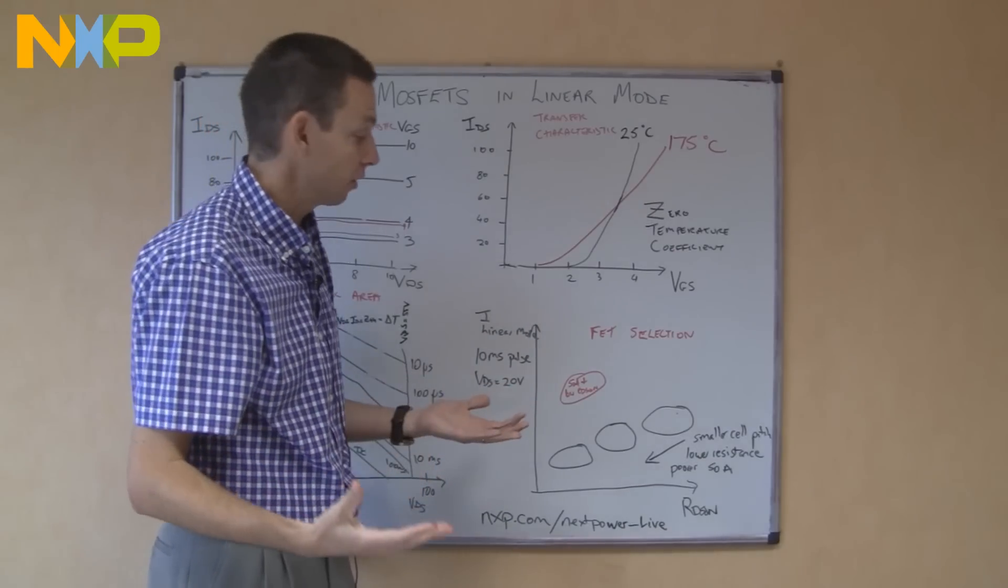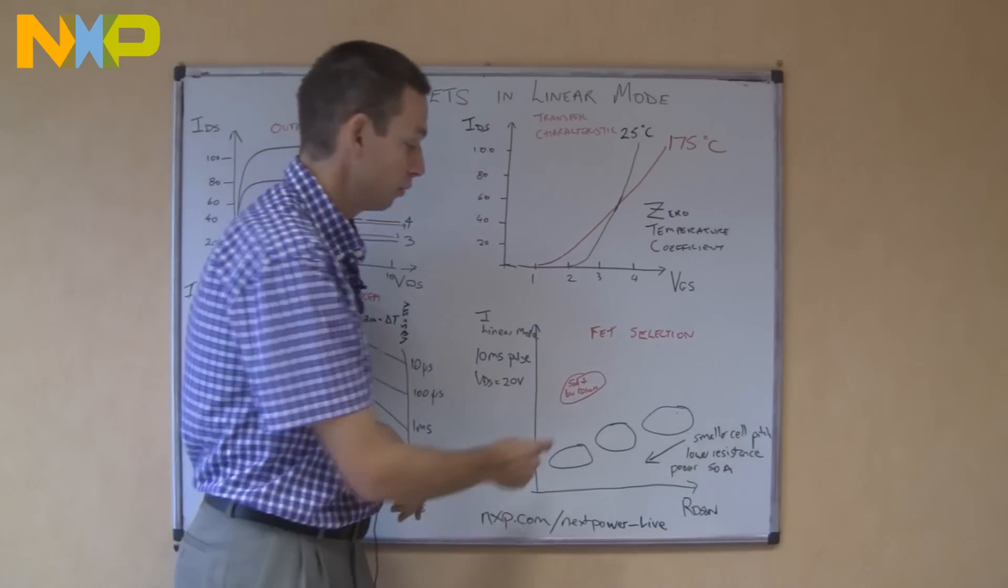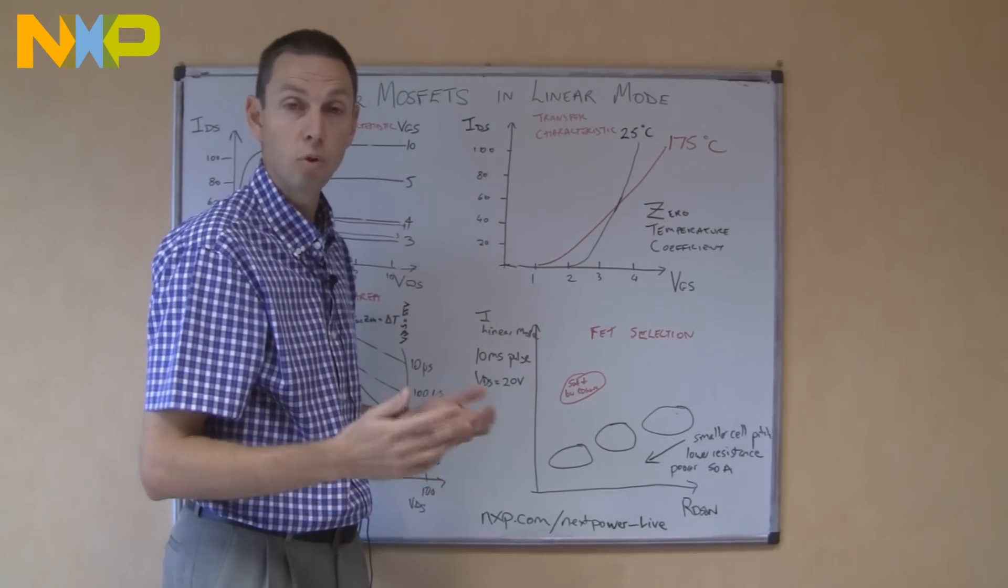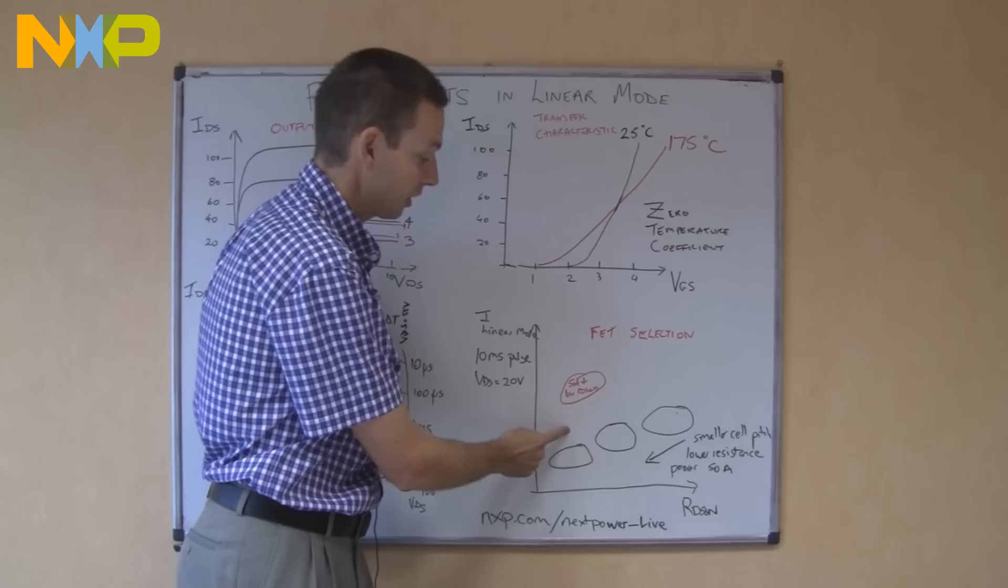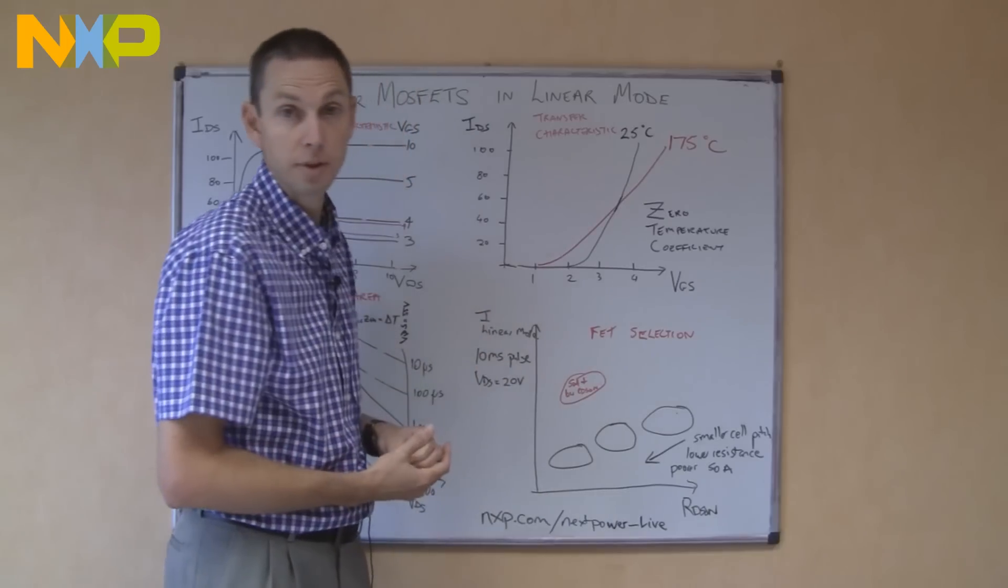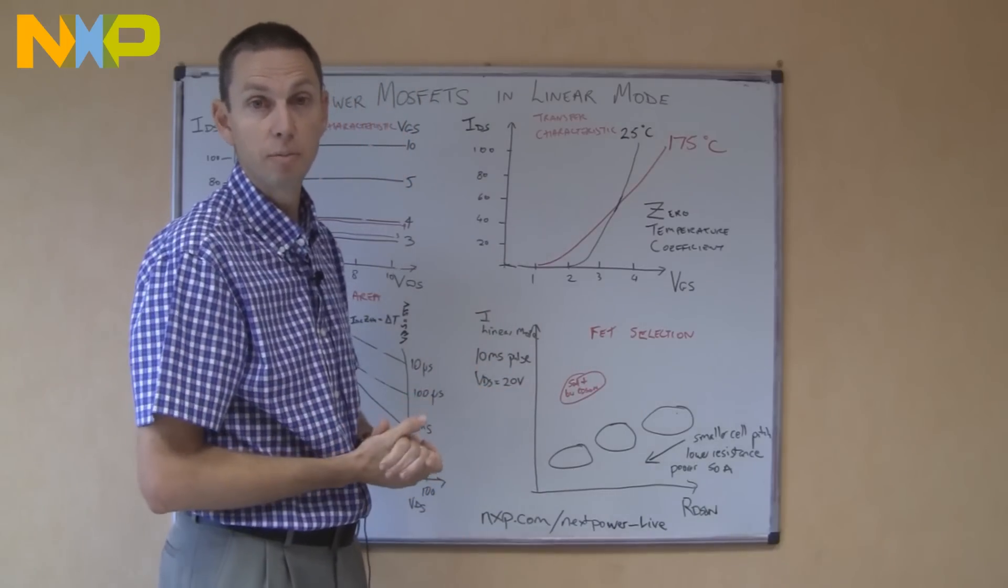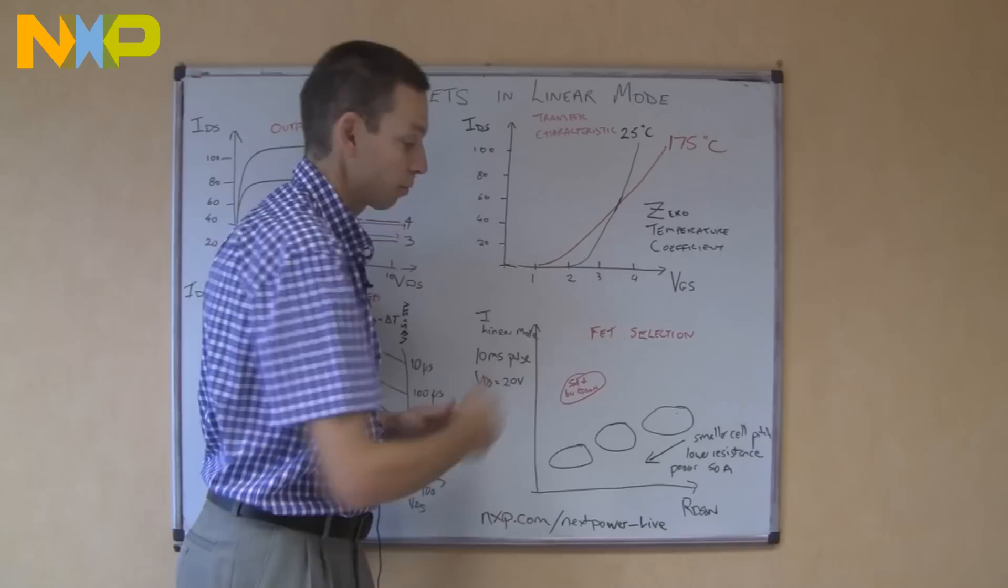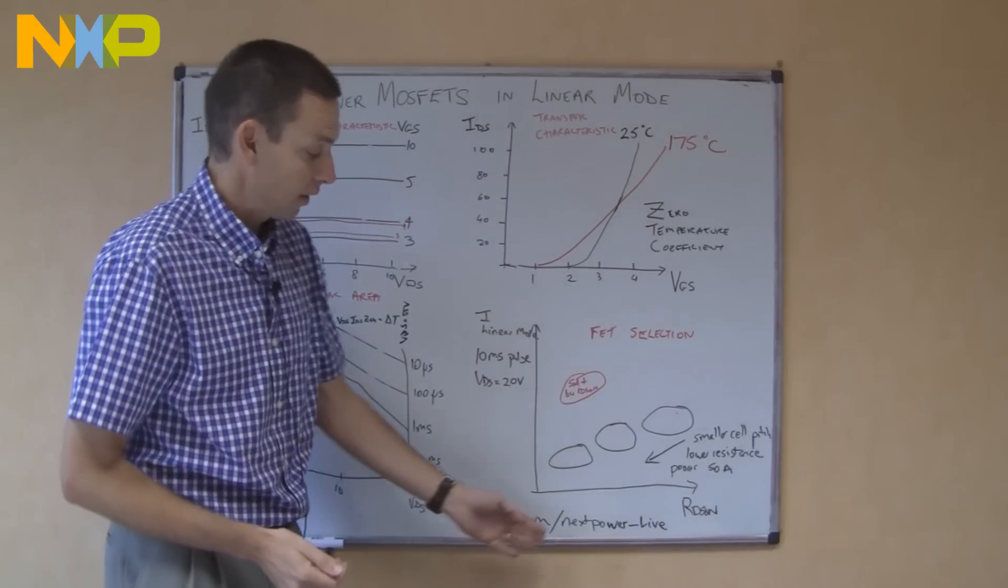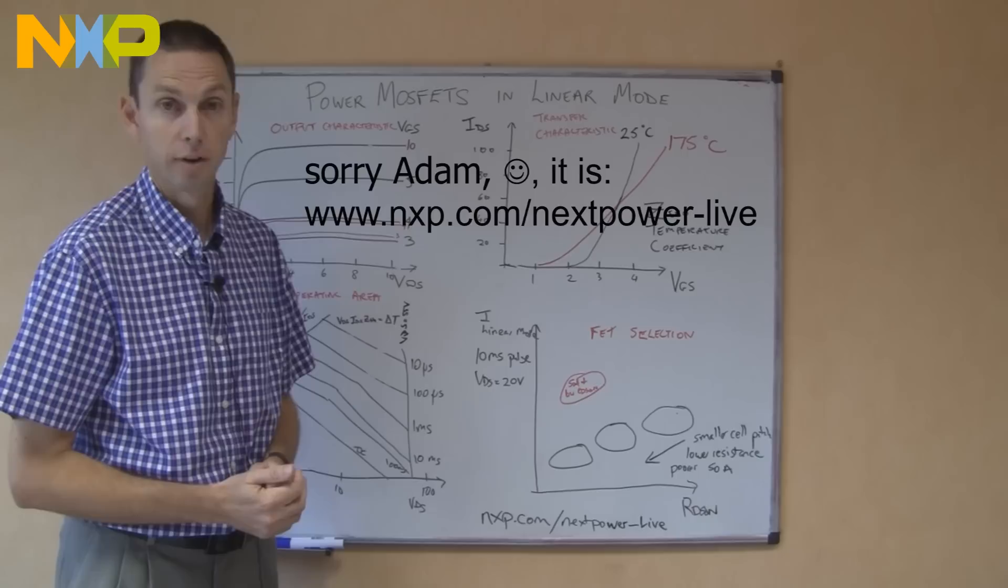What you find is though, for many applications nowadays, that's not good enough. MOSFETs do need to have some safe operating capability. So for hot swap or for soft start, you might need to have a MOSFET which has got both low resistance and good linear mode capability. And suppliers are starting to develop MOSFETs specifically for that sort of operation. NXP has developed a family, and you can find that at nxp.com/forwardlive.